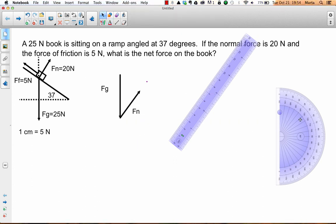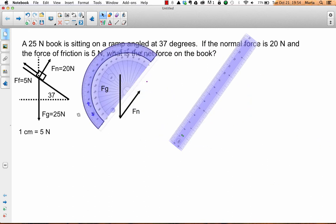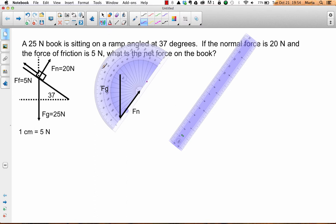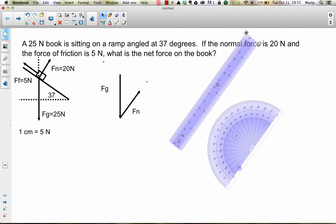Now, since friction is parallel to the surface and the normal force is perpendicular, that means that those two forces must be perpendicular to each other. So now that I've got the normal force, it's going to be pretty easy to find the angle for friction. I'm going to just draw it in at 90 degrees to the normal.